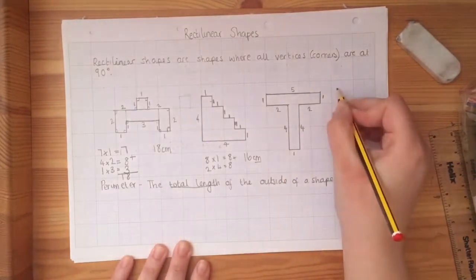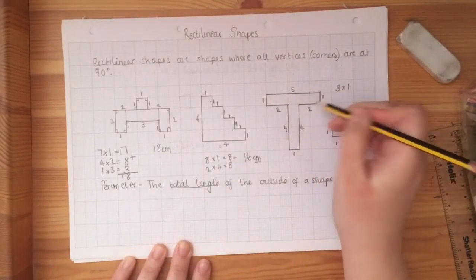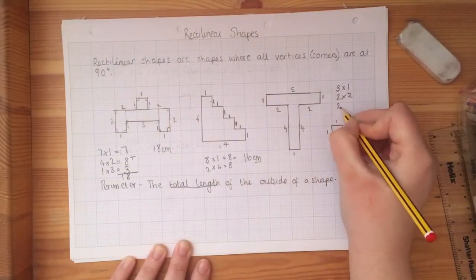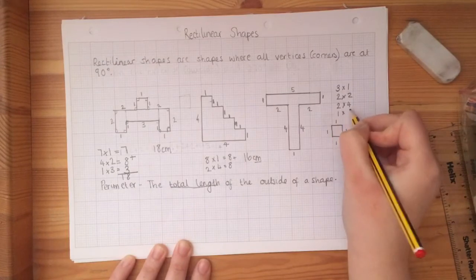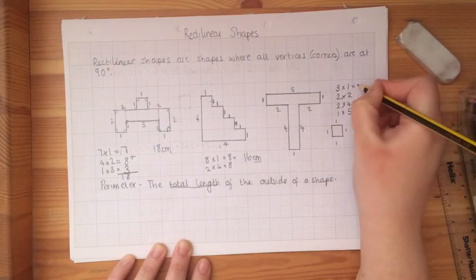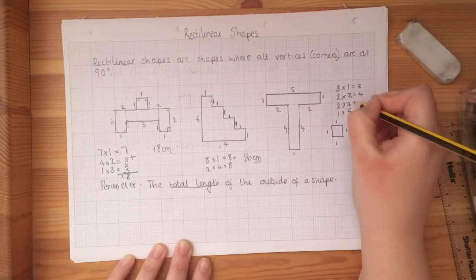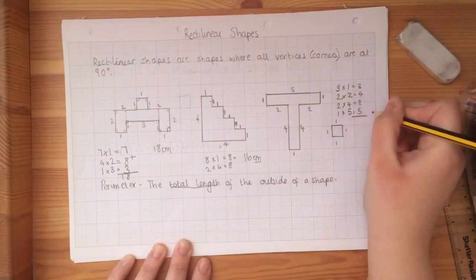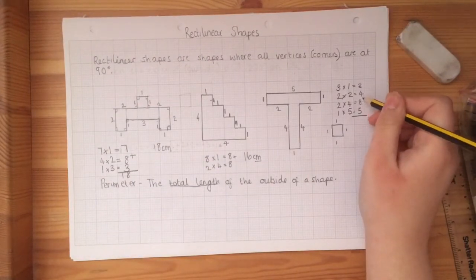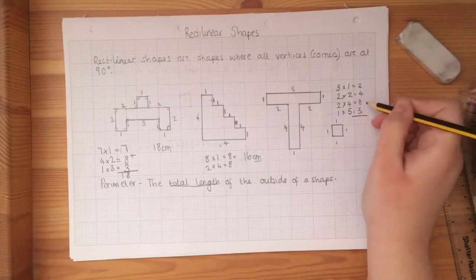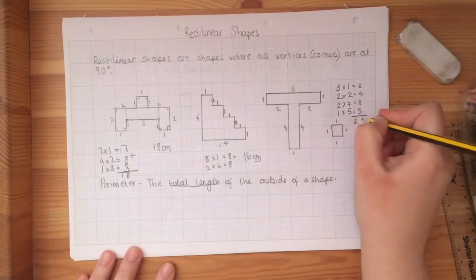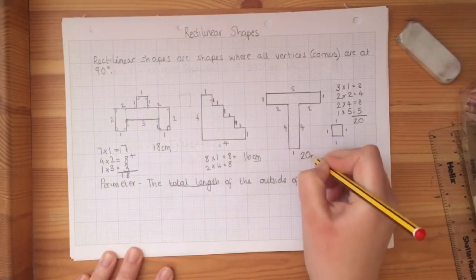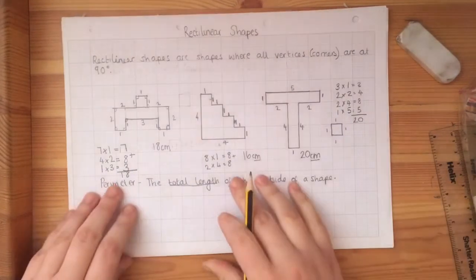So I've got one, two, three times one, two times two. I don't have any threes, but I've got two fours. So that's two times four. And I've got one times five. So three times one is three. Two times two is four. Two times four is eight. And one times five is five. So now I just need to add them all together. So eight and three is 11. Four add five is nine. 11 add nine is 20. So the total perimeter for this shape is 20 centimeters. Remember my centimeters.